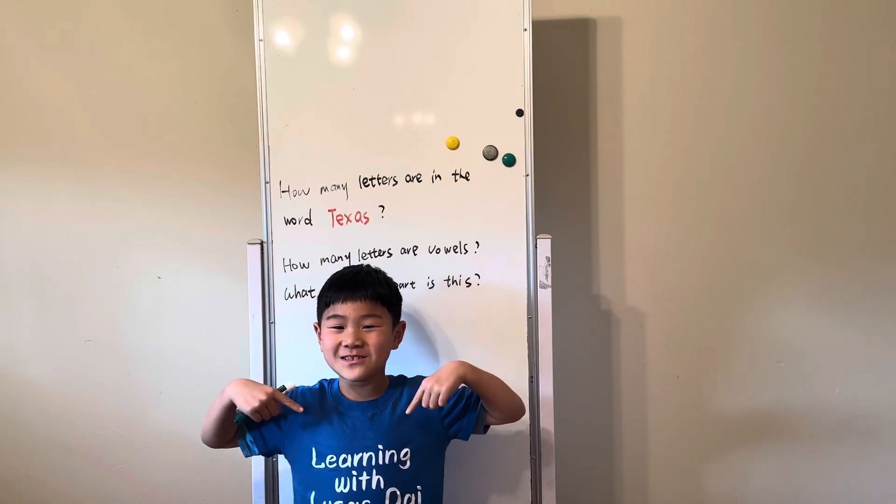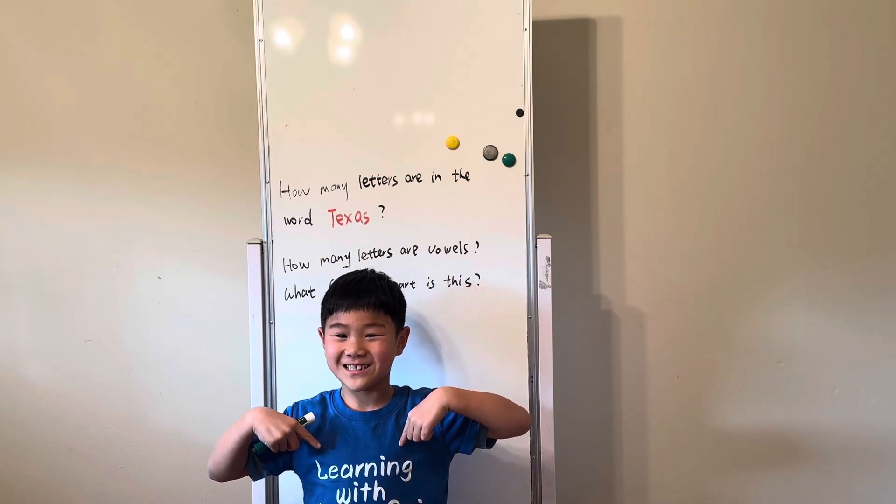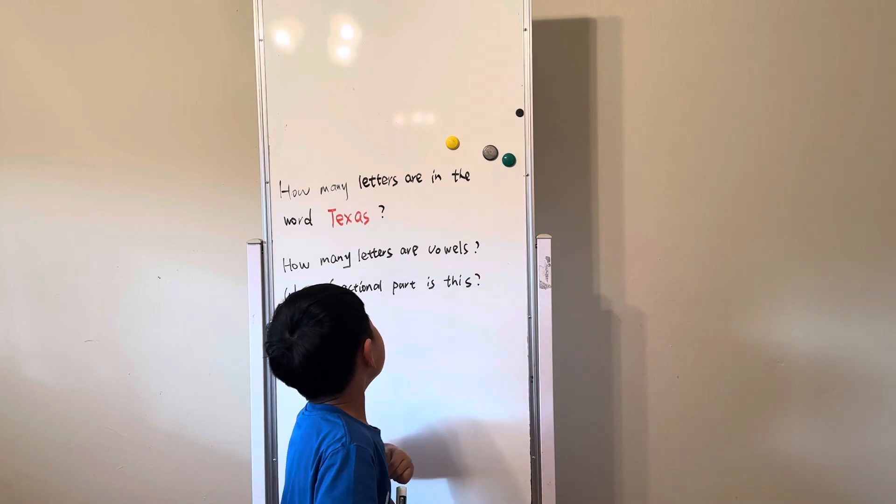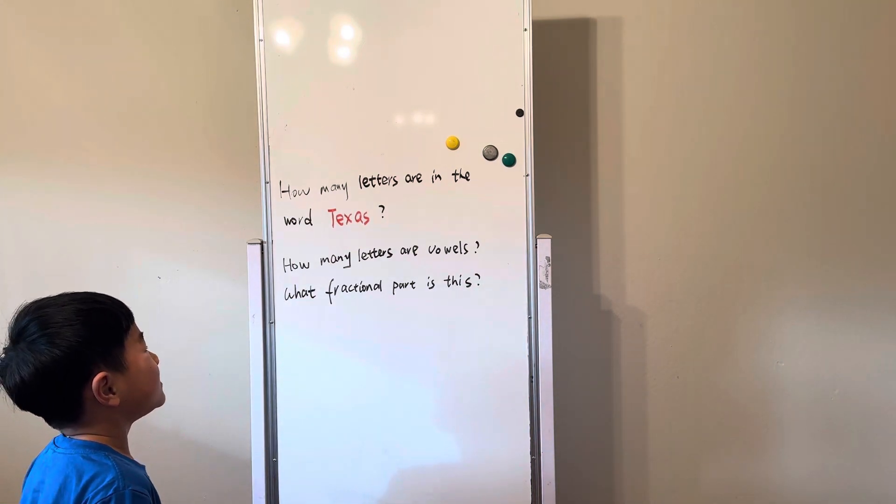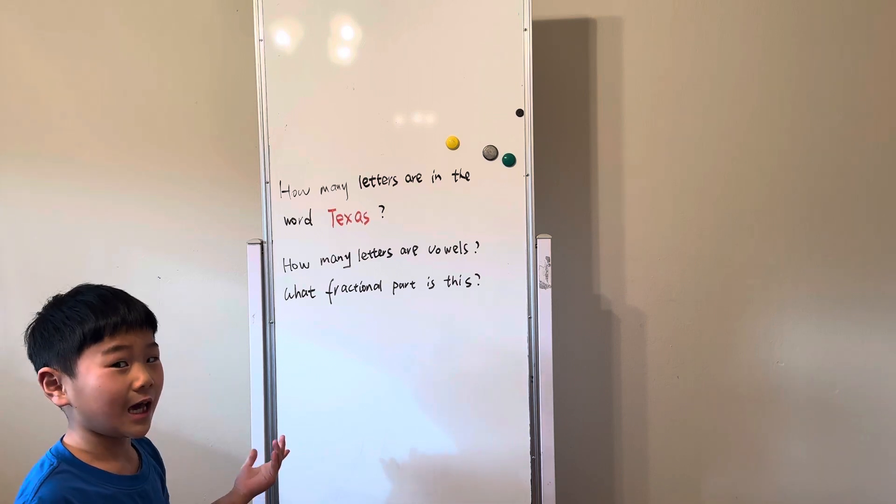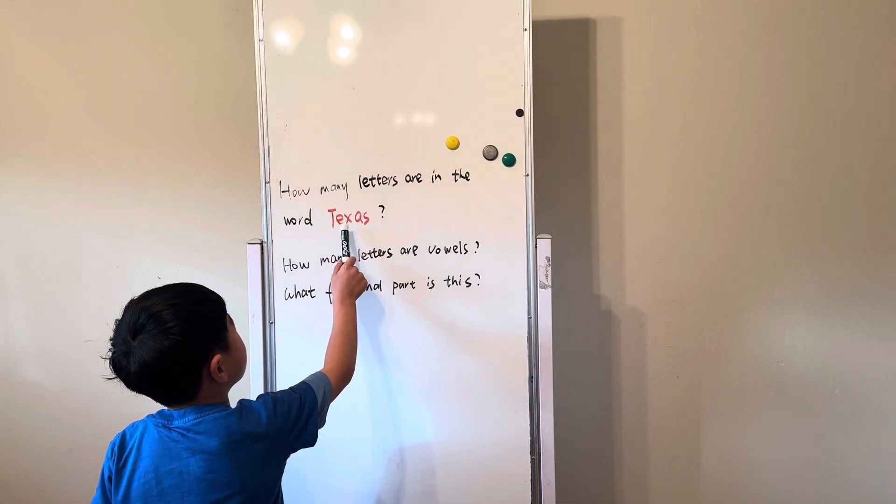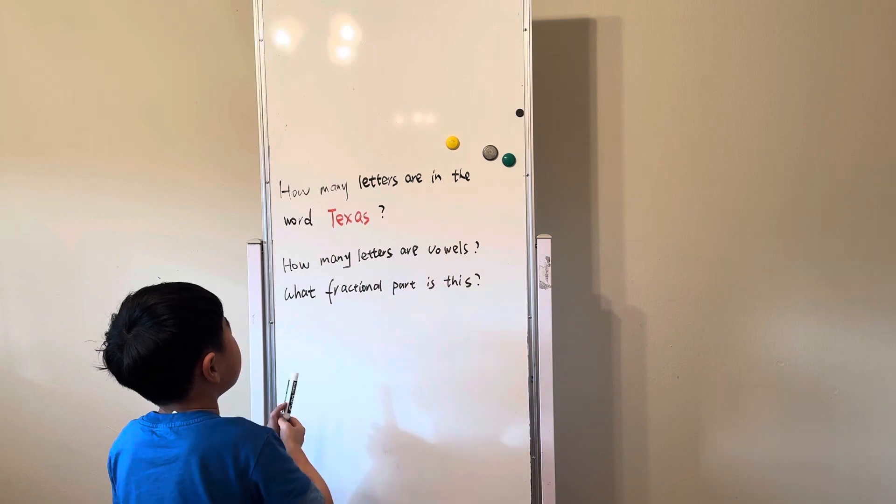Hi everybody, welcome to Learning with Lucas. Today we're going to look at this question: how many letters are in the word Texas? Well, we can count of course—one, two, three, four, five. Five letters.